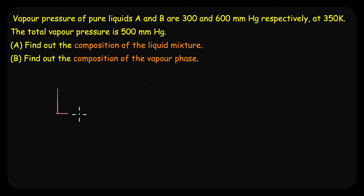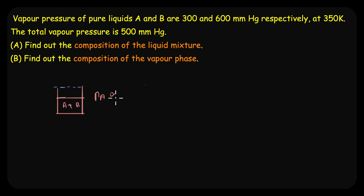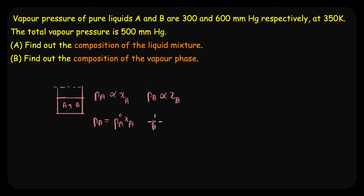For instance, if our solution contains two components A and B, both volatile liquids, then the partial vapor pressure of component A, PA, is proportional to its mole fraction XA. Similarly, the partial vapor pressure of component B, PB, is directly proportional to XB. Removing the proportionality, PA = PA° · XA and PB = PB° · XB.